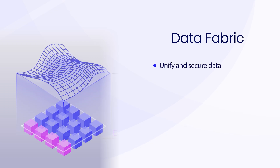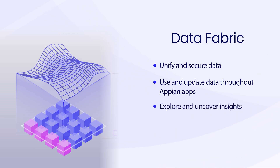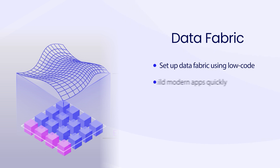Through this layer, you can unify and secure enterprise data, then easily use and update it throughout your Appian applications. Business users can also explore and uncover insights about your data in Process HQ. Best of all, developers can set up your data fabric using low-code configurations. Once it's in place, you can build modern data-driven apps quickly, and because data fabric automatically optimizes and scales, performance stays strong without manual tuning.